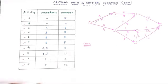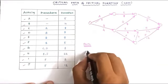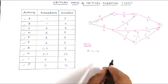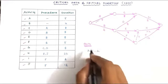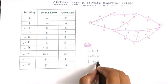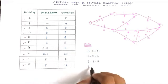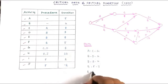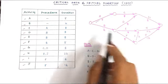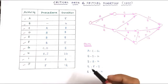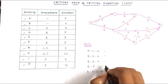After drawing the network, we calculate all paths. There are 5 paths in this network diagram: Path 1 is A–C–G, Path 2 is B–D–G, Path 3 is B–E–H, Path 4 is B–F–J, and Path 5 is B–F–I–H. Now we put the corresponding durations for each path.